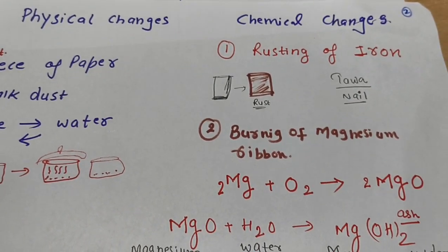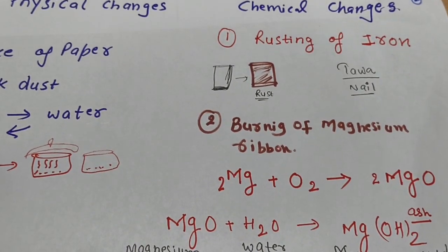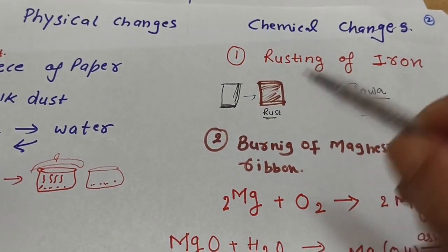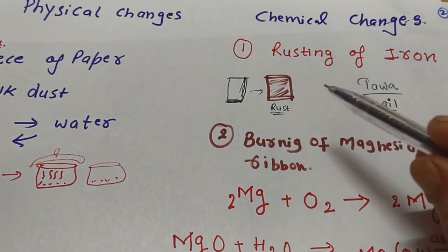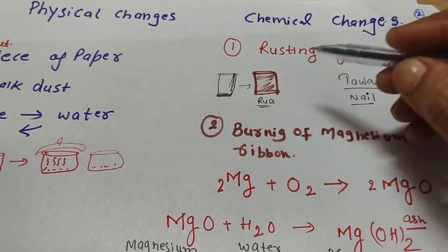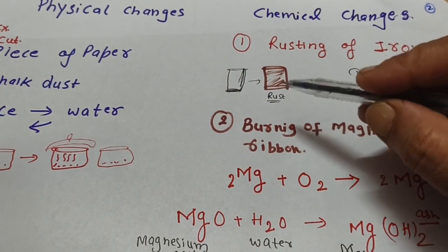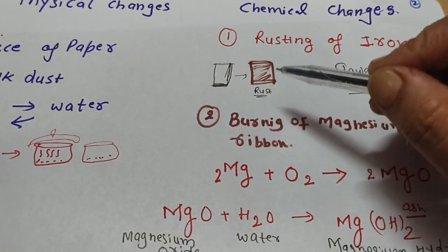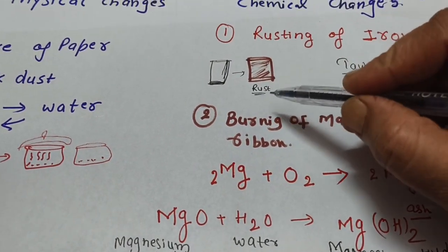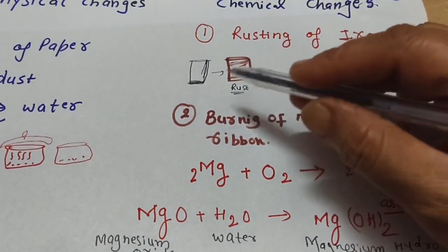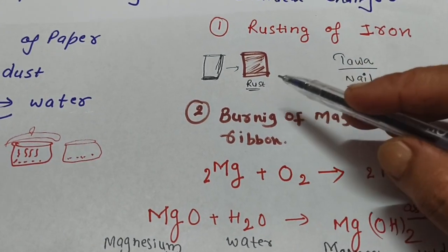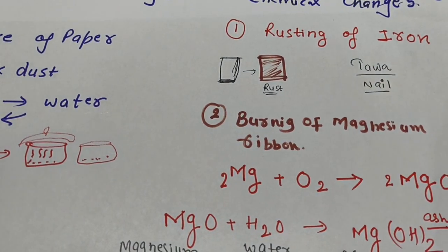Now let's look at some chemical changes. Like iron — you know, loha — rusting of iron. When iron is exposed to air and water, a brown color change appears. That is a chemical change.